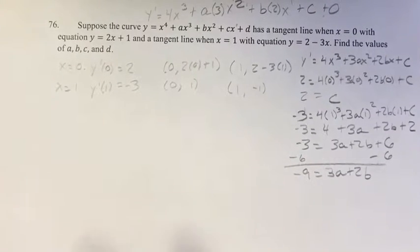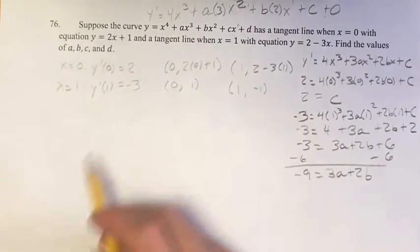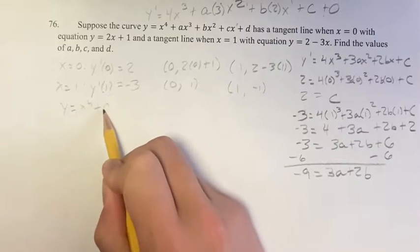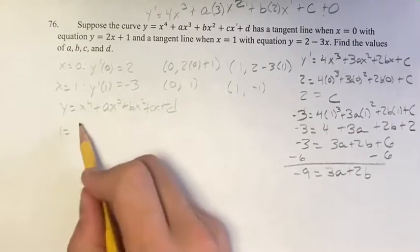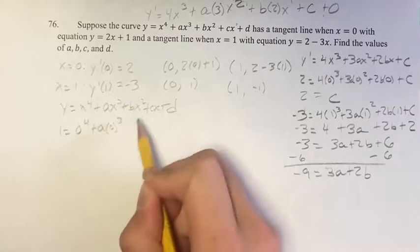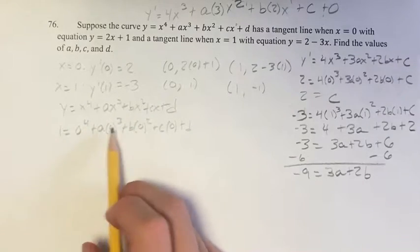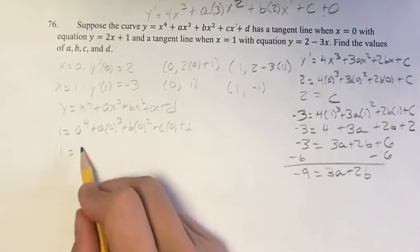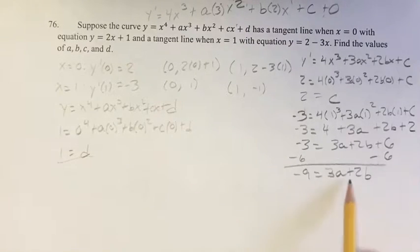This is as far as we can get with that equation right now. We also know that the point 0, 1 is on the curve. Plugging in 1 for y and 0 for x into y equals x to the 4th plus ax cubed plus bx squared plus cx plus d, all terms with x go to 0, so 1 equals d. Now we have d equals 1 and c equals 2, and we need to find a and b.